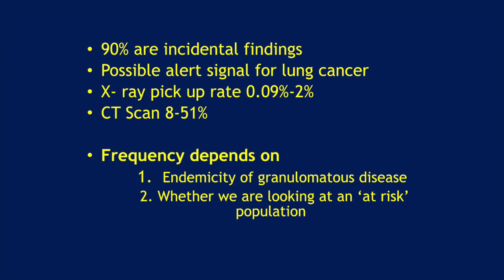First, endemicity of granulomatous disease, which means it is more frequent in areas where tuberculosis is common. Second, whether we are looking at an at-risk population — a population where smoking is more common, elderly patients are more common, and whether people have a previous history of cancer or asbestos exposure. We will discuss the at-risk population in more detail later.